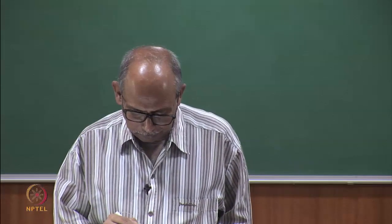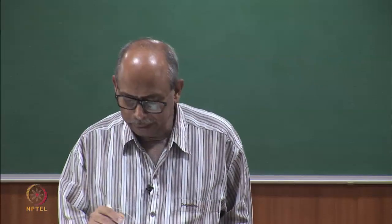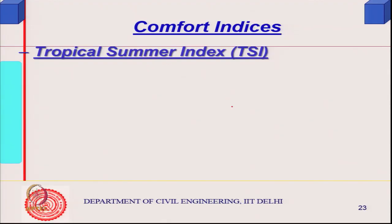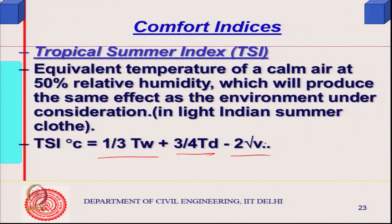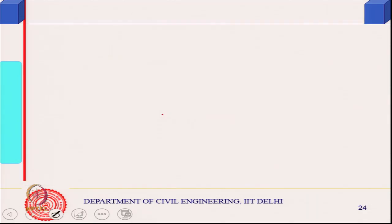This is the tropical summer index we looked at in the last class. The formula associated with this is approximately one-third wet bulb temperature plus three-fourths dry bulb temperature, divided by the square root of V. This is a slightly more empirical, slightly more elaborate equation, but good enough for our purpose. This is the equivalent temperature of calm air at 50 percent relative humidity which will produce the same effect as the environment under consideration.